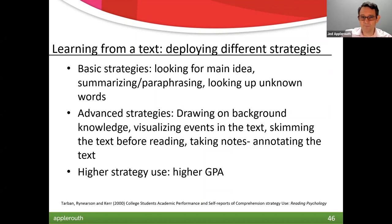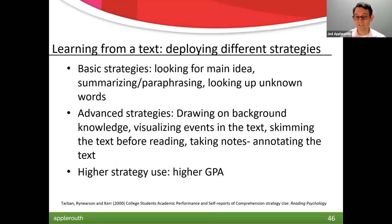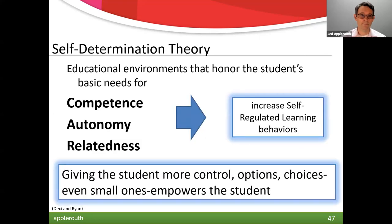There are different strategies for learning from a text — skim, take notes, annotate, review. Kids who use more strategies end up with higher GPAs. Kids who are summarizing, looking for key ideas, looking up words they don't know — versus kids who are just passively reading. The more active, engaged, and generative the approach, the better.